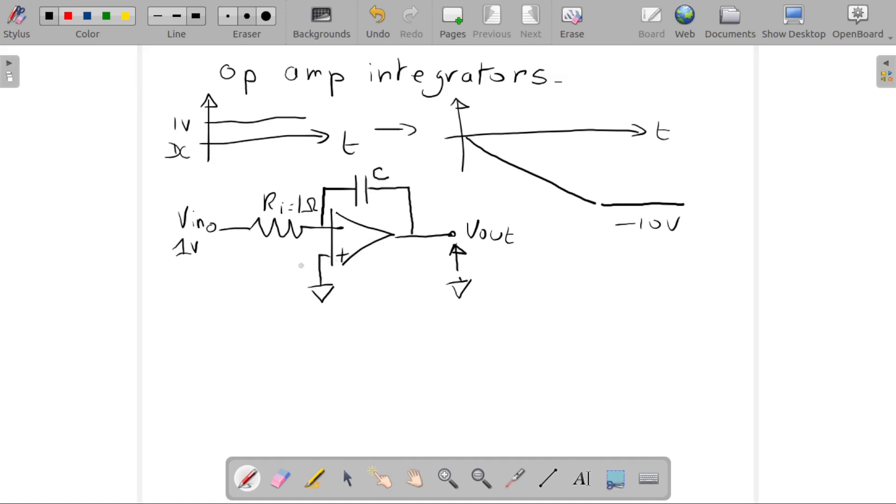So what's important to notice right away is that here at the non-inverting input we have zero volts. What does that mean at the other input, the inverting one? This one has to also be at zero volts.